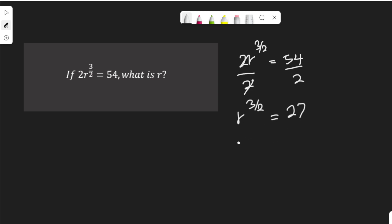Expressing 27 in index form, I use 3 to the power of 3. Now this R to the power of 3 over 2, I can write it as R to the power of half to the power of 3 equal to 3 to the power of 3.